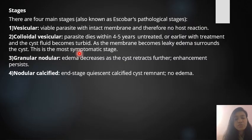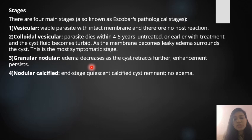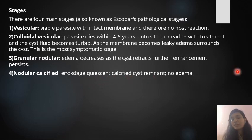The SCOLBAR staging for neurocysticercosis has four stages: vesicular stage with viable parasite and intact membrane; colloidal vesicular stage after four to five years untreated or with early treatment, where the cyst fluid becomes turbid and as the membrane becomes leaky, edema surrounds the cyst — this is the most symptomatic stage; granular nodular stage, where edema decreases as the cyst retracts further and enhancement persists; and finally the nodular calcified stage, which is the end-stage quiescent form with calcified cysts.